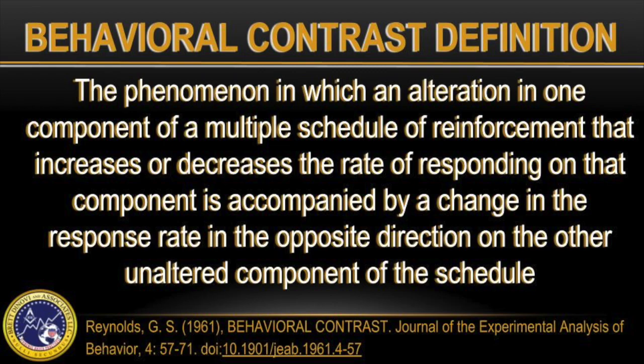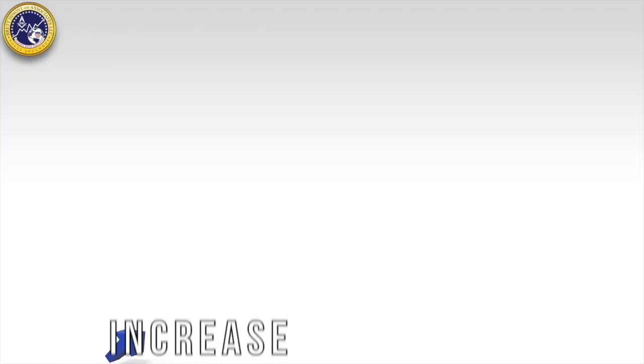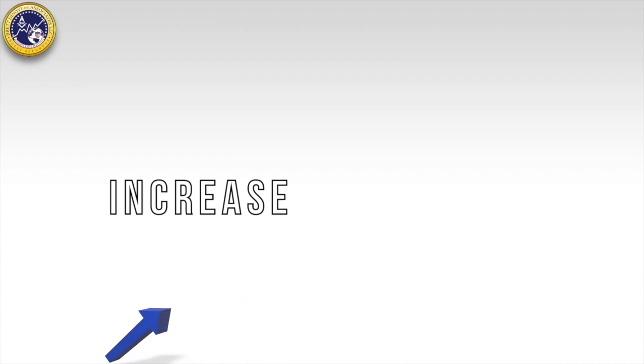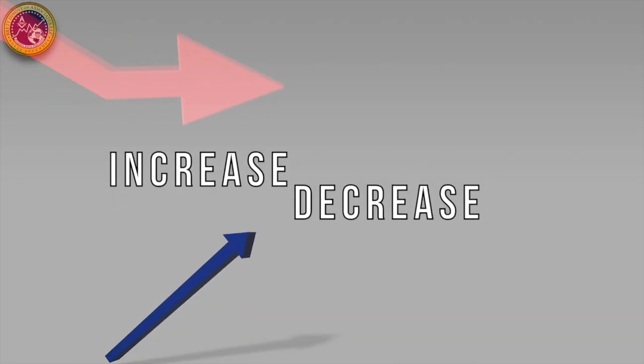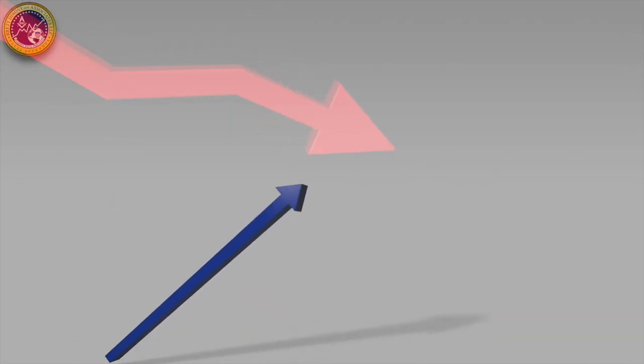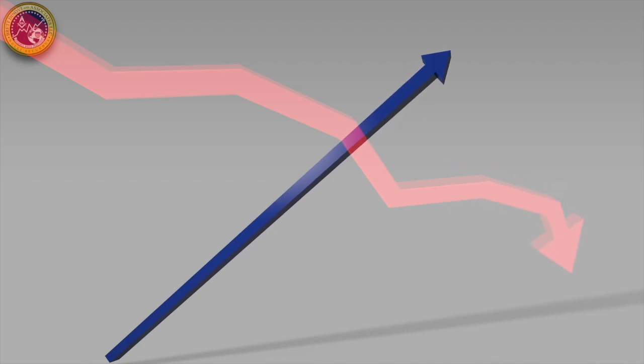that increases or decreases the rate of responding on that component is accompanied by a change in the response rate in the opposite direction on the other unaltered component of the schedule. Or, to put it simply, an unintended increase or decrease in your target behavior that is opposite of your intervention goal for the same behavior in a different environment.